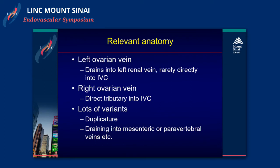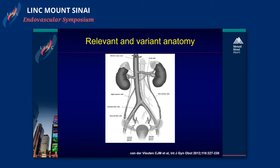The anatomy that is relevant is the left ovarian vein that drains into the left renal vein, rarely directly into the inferior caval vein. The right ovarian vein is typically originating directly from the caval vein, but you need to be aware of lots of variants with duplications, draining of the veins into the mesenteric or perivertebral veins. Here you can see the right ovarian vein coming off directly from the inferior caval vein, but it might also come off from the right renal vein. And here you can see all the variants from the left side.